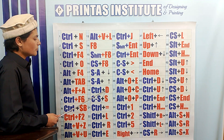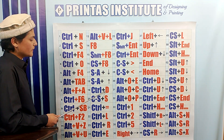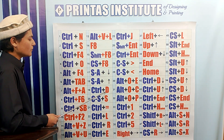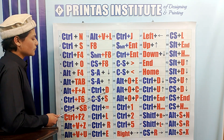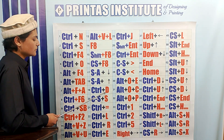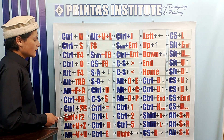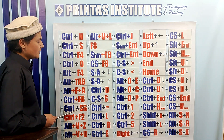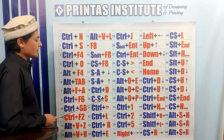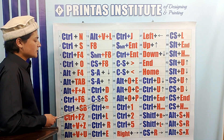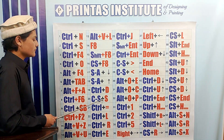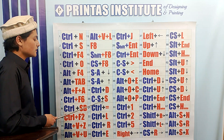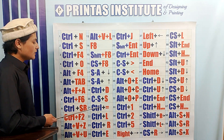Ctrl D is used to open the font window in which we can change our font settings, our font size, and many other things. Ctrl Shift S is used to apply the defined style sheet in which we have saved our format of style.